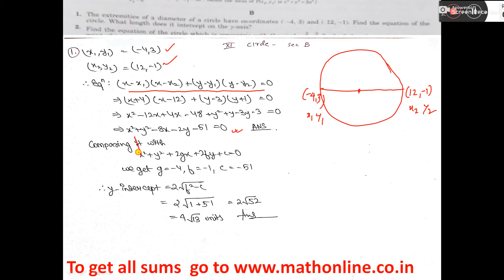Now if you compare, see x² is matched, y² is matched. For 2gx, the value of g will be -4, see that is written. Here 2fy, so value of f will be -1 and c will be -51.